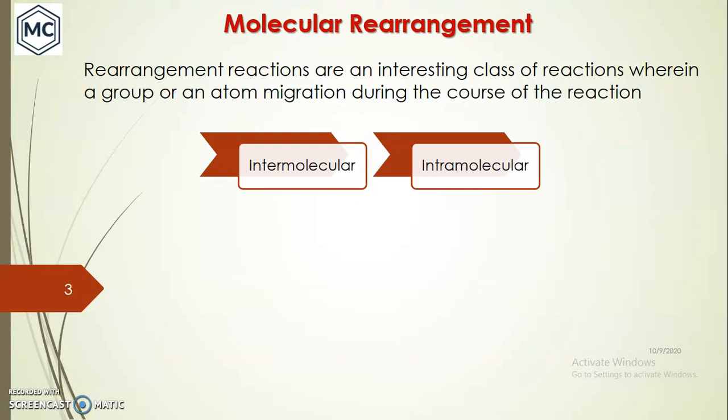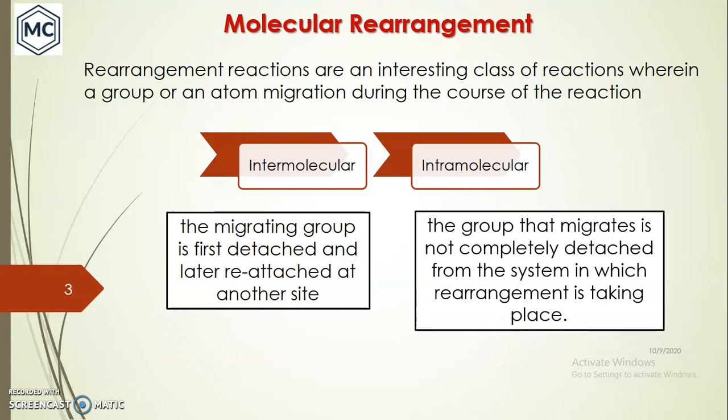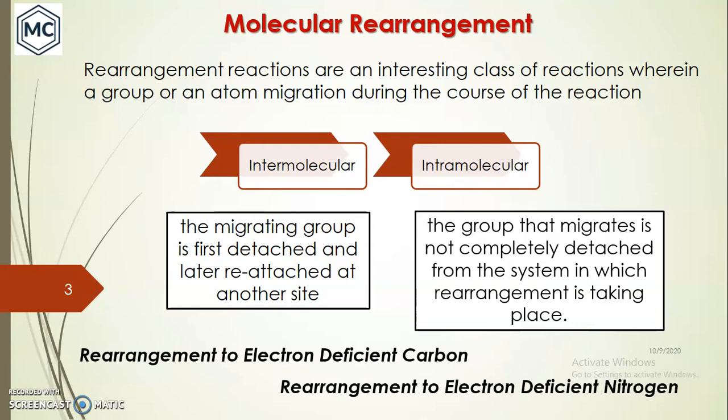Rearrangement reactions are an interesting class of reactions wherein a group or atom migration takes place during the course of a reaction. There are two types of rearrangement: intermolecular and intramolecular. Intermolecular means the migrating group is first detached and later reattached at another site. In intramolecular rearrangement, the group that migrates is not completely detached from the system.